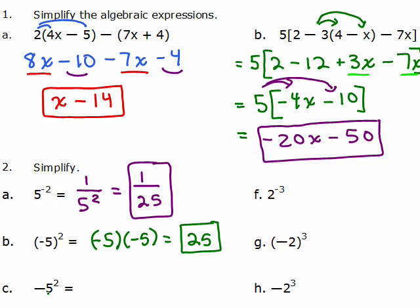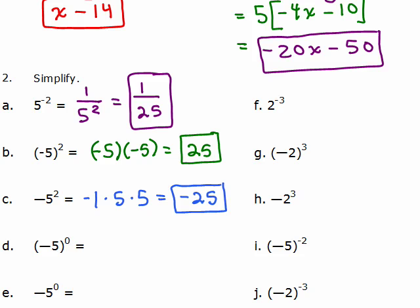For part c, there's a minus sign but it's not in parentheses, so only the 5 is being squared. That negative is really the same as writing negative 1 times 5 squared, and 5 squared is 5 times 5, which is negative 25. For part d, negative 5 is in parentheses and raised to the 0 power — anything to the 0 power equals 1. For part e, the minus sign is out in front, so we have negative 1 times 5 to the 0, which is negative 1 times 1, which is negative 1.